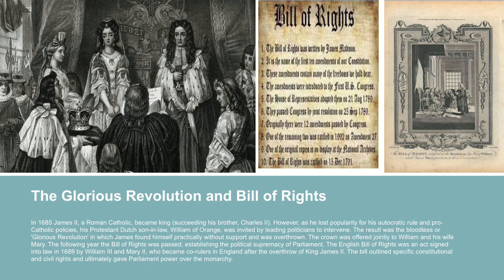The restoration of the monarchy in England in 1660 marked the return of Charles II as king, following the period of Oliver Cromwell's commonwealth. Charles II was the son of Charles I. In 1685, James II, a Roman Catholic, became king, succeeding his brother Charles II.